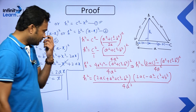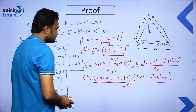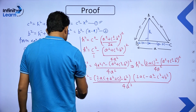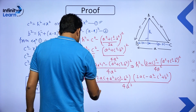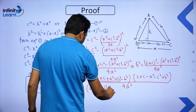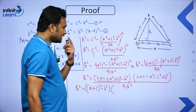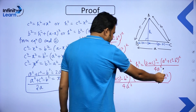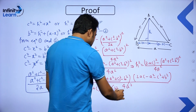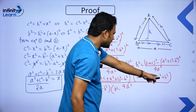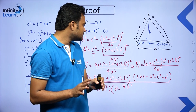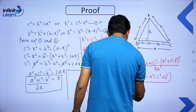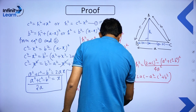Applying the difference of squares identity again to (A+C)² − B² gives (A+C+B)(A+C−B). For the second factor, taking minus common from B² − (A−C)² gives (B+A−C)(B−A+C). So H² = (A+B+C)(A+C−B)(A+B−C)(B+C−A) / 4A².